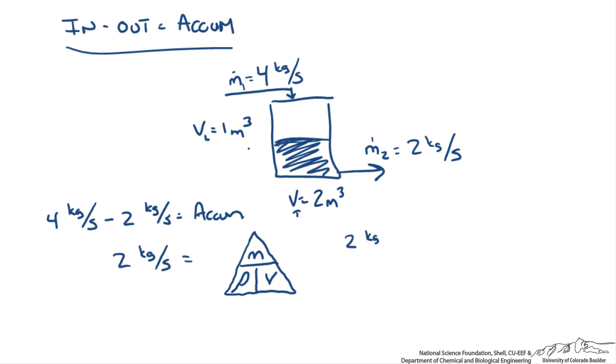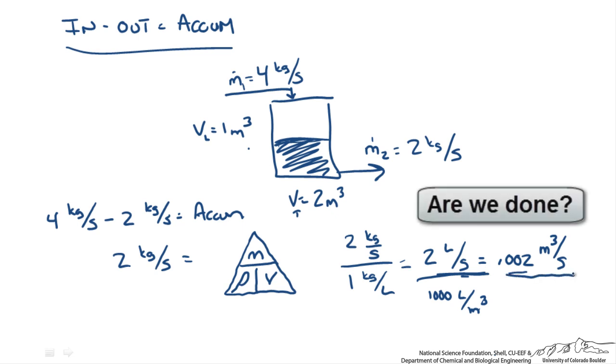So 2 kilograms per second divided by the density of water, which is 1 kilogram per liter, is going to give us 2 liters per second. However, we are not working with liters, we are working with meters cubed. So this is going to be 0.002 meters cubed per second because there is 1,000 liters per meter cubed. And we are going to divide by that to cancel out our liters and get meters cubed on top. We have 0.002 meters cubed per second.